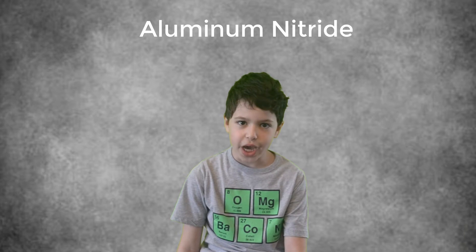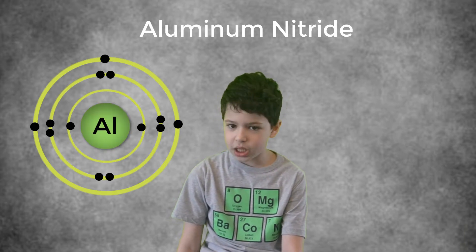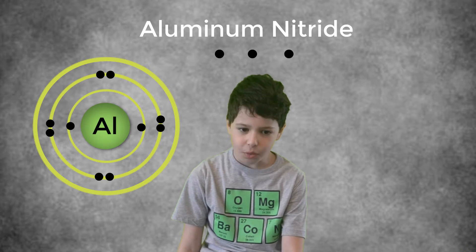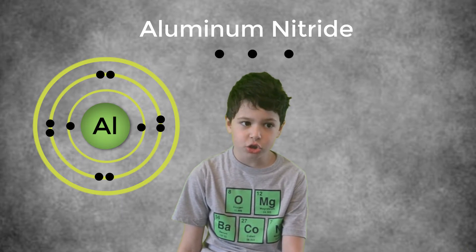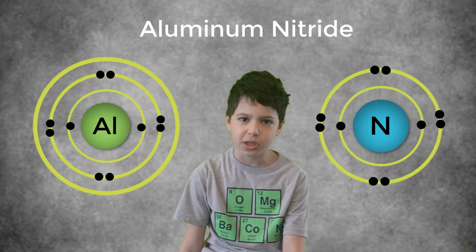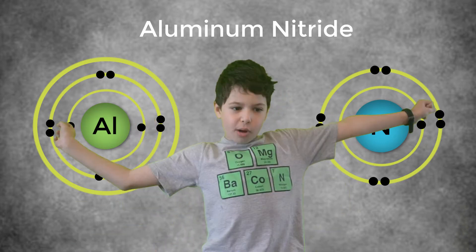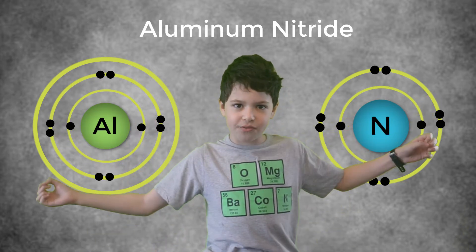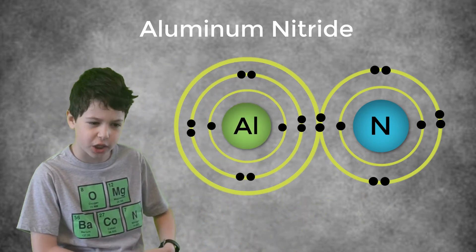Let's take aluminum nitride as an example. Aluminum loses 3 electrons to form an ion with a plus 3 charge. The electrons are not lost, but transferred to a nitrogen atom to form a nitride ion with a minus 3 charge. The two ions are oppositely charged and will attract each other in an event called an ionic bond.